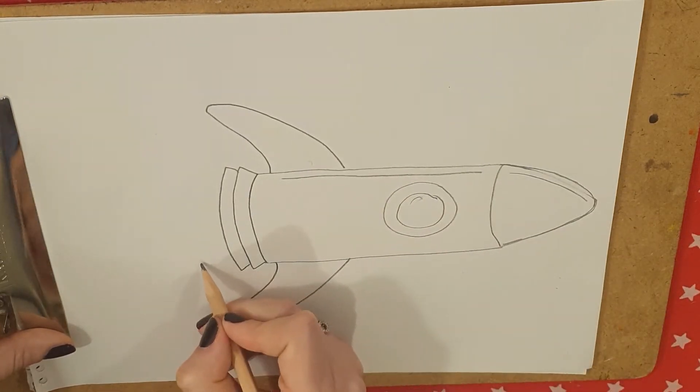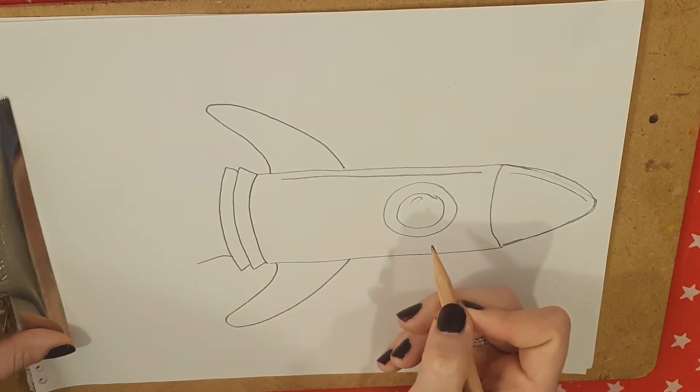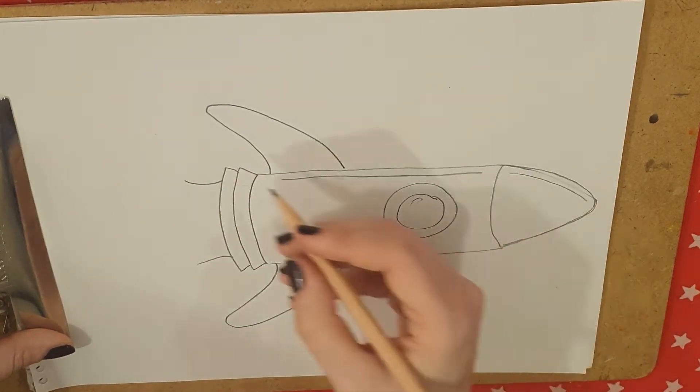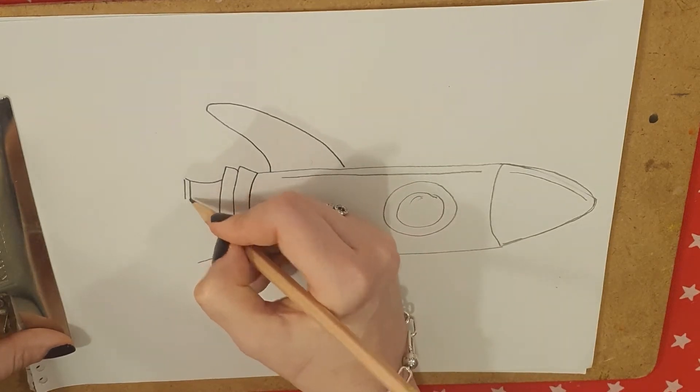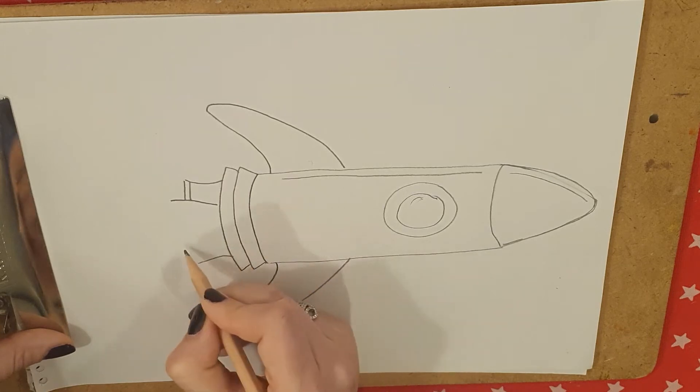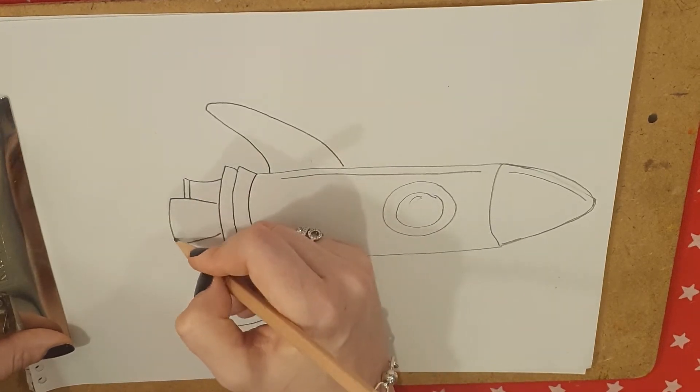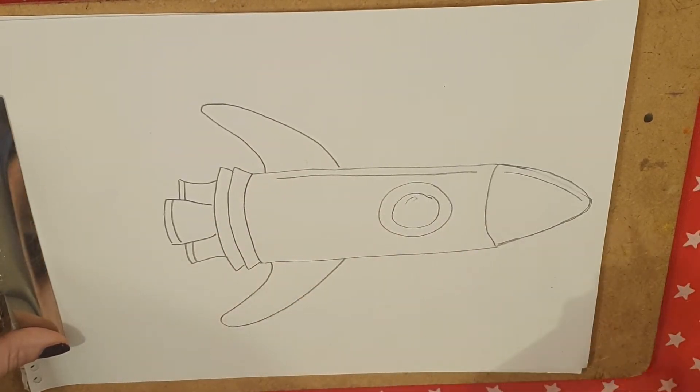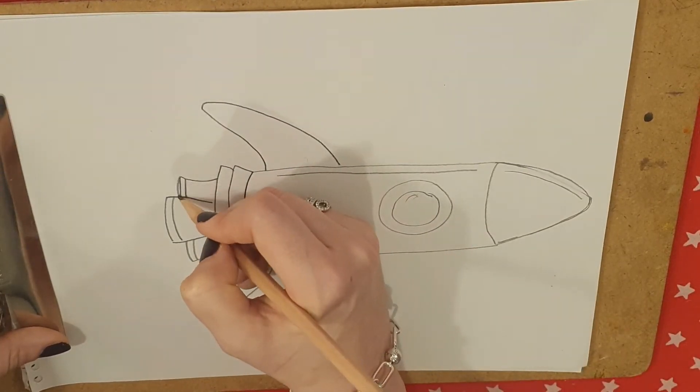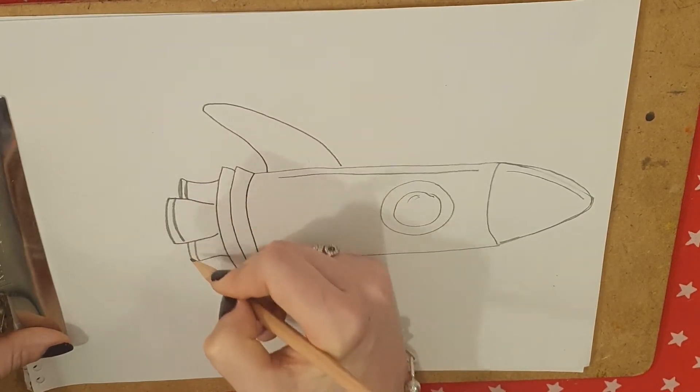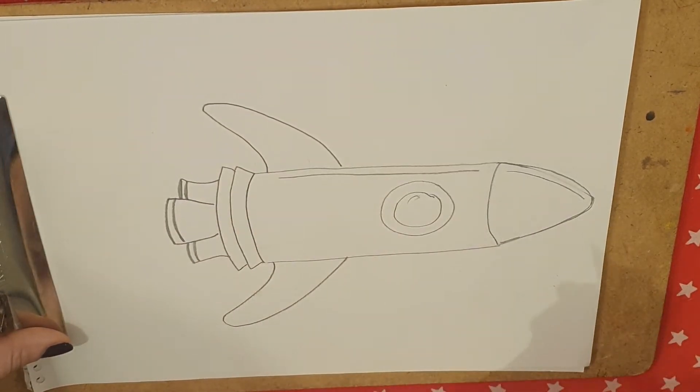Now it's time for the engine. So all you're going to do is draw one line like that, one line like that, kind of curved in two lines, but not very long, another line, and another line, and two lines, and two lines. Easy peasy. Make sure that they all look like they've got round engines.